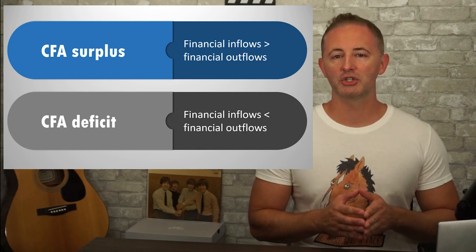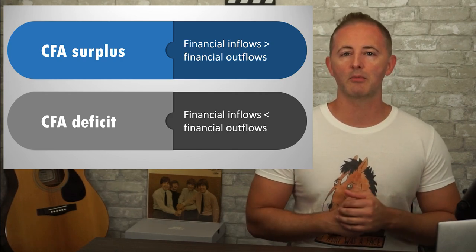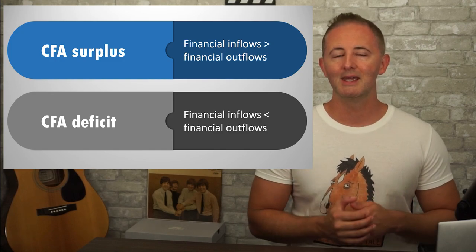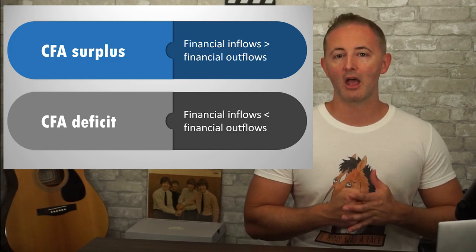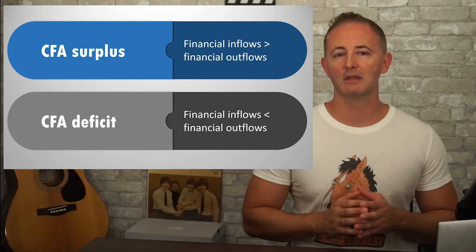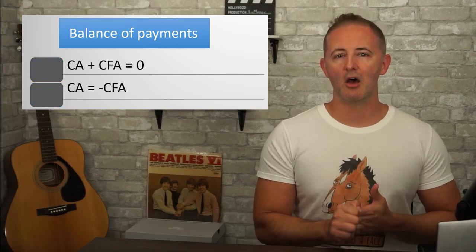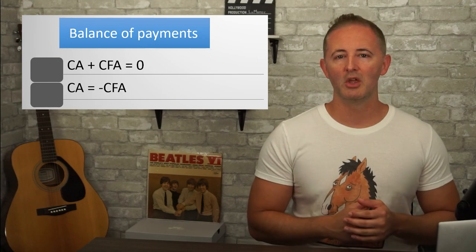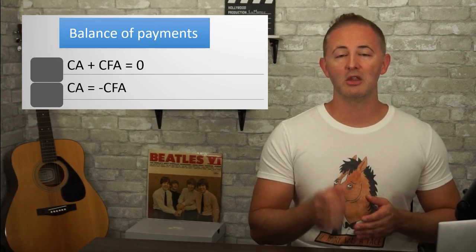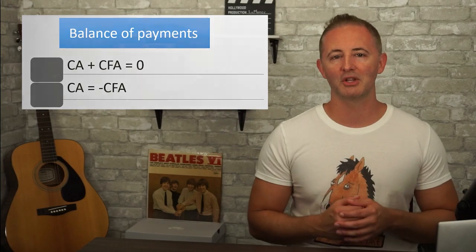For example, if people in foreign countries are investing in this country's stock market or purchasing U.S. bonds, this increases the U.S.'s capital and financial account balance, and it decreases the balance of the capital and financial account in their home country. The balance of payments includes both the current account and the capital and financial account, and while each can individually be in surplus or deficit, taken together they'll be balanced. The current account plus the capital and financial account equals zero.